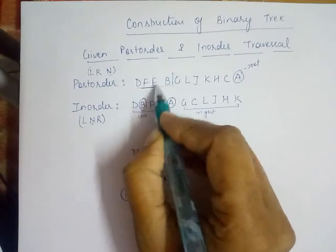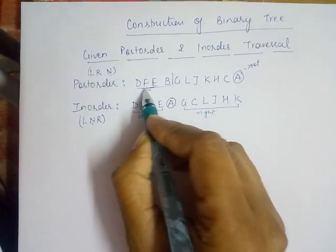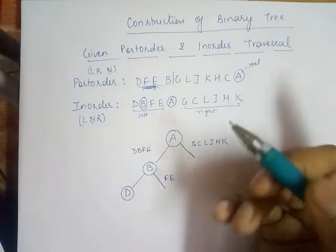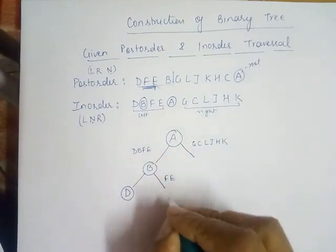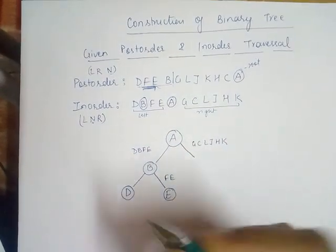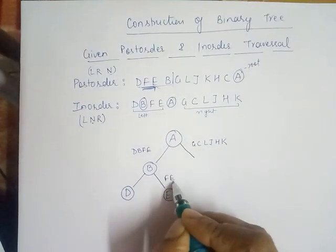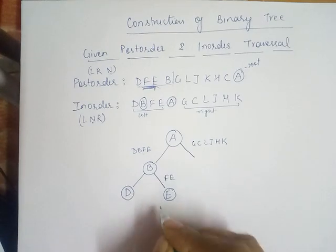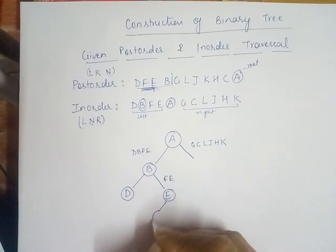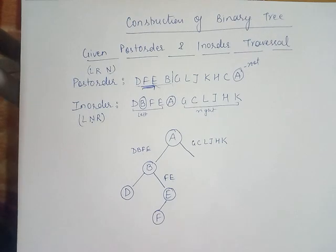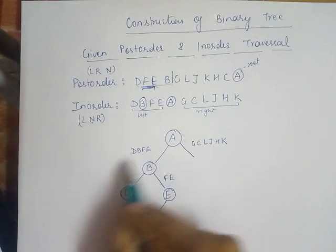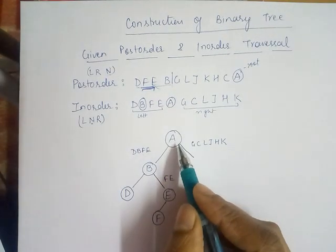For the 'fe' sequence in postorder, 'e' comes last, so 'e' becomes the root node. If 'e' becomes the node, then the left part 'f' becomes the left child. This completes the left subtree of the root node 'a'.